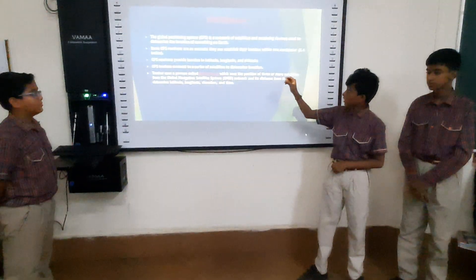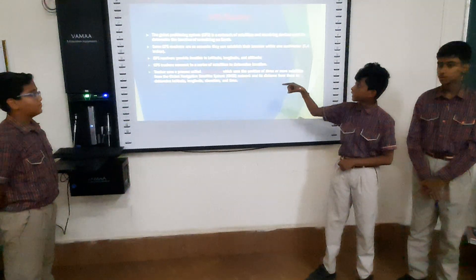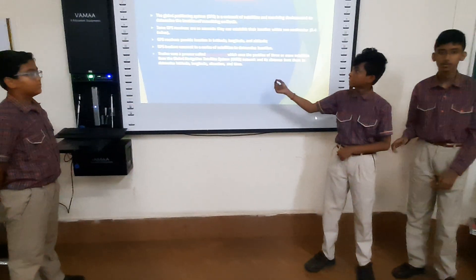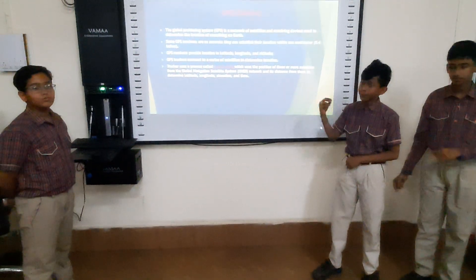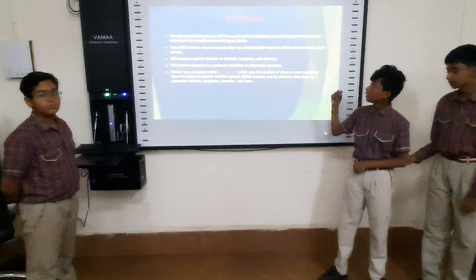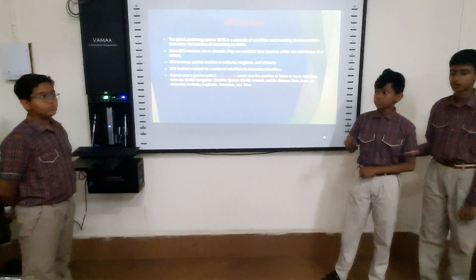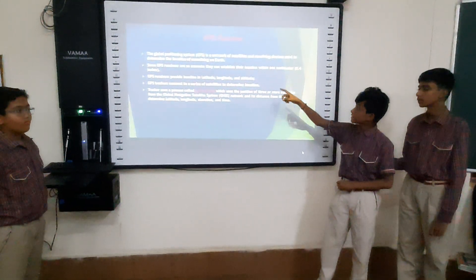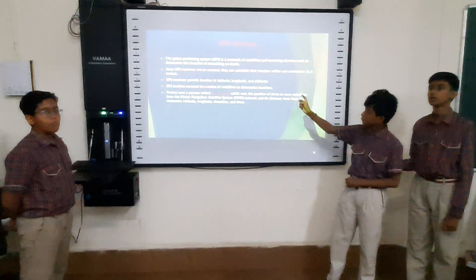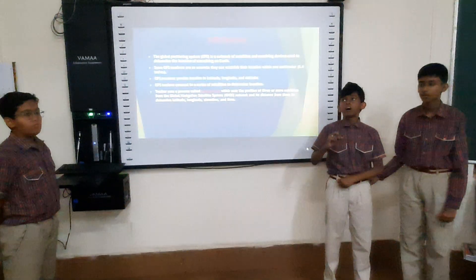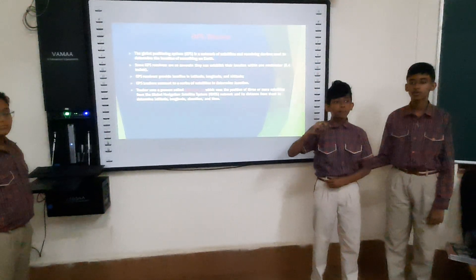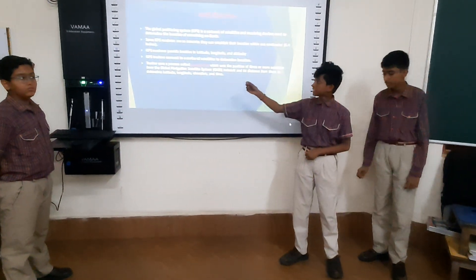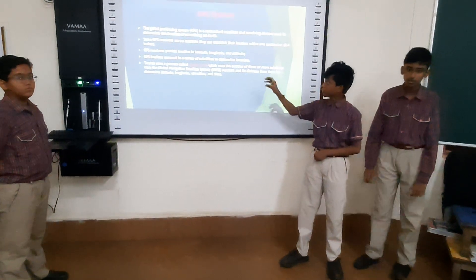GPS is a network of satellites and receiver devices used to determine the location of something on Earth. Some GPS trackers are also very accurate and can establish location within one centimeter. The GPS tracker can track a child over 10 kilometers. GPS trackers connect a series of satellites to determine the location.